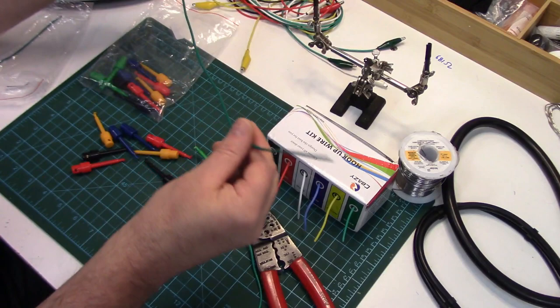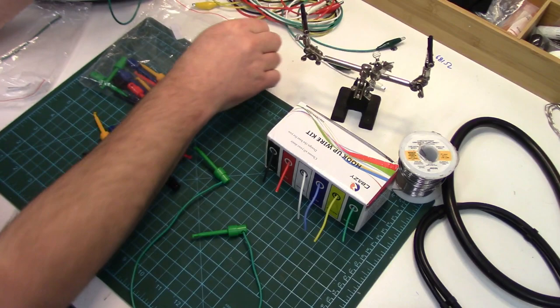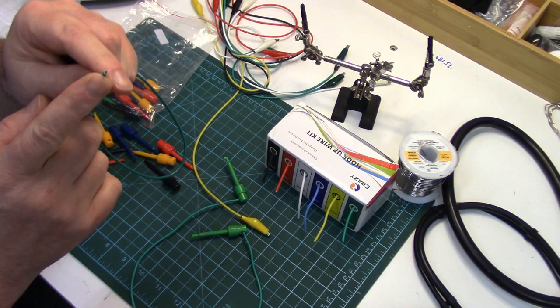What usually fails on them is the way they crimp them to the alligator clip. What they do is they strip off the wire end, fold it under, and then it's crimped into the alligator clip.